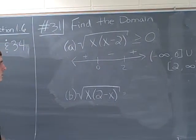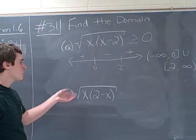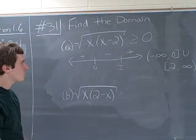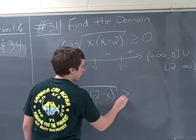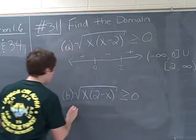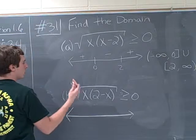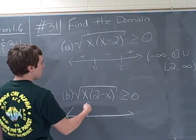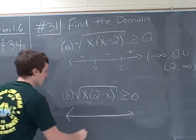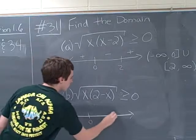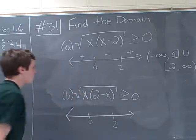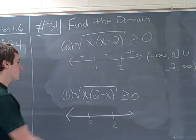Alright. Part B says it's almost the same thing. It's the square root of x times 2 minus x. Again, we're going to do this in the form of a sign chart. This has to be greater than or equal to 0. Our critical values at this time are again, the same thing, 0 and 2. And so we're going to do our test point again.